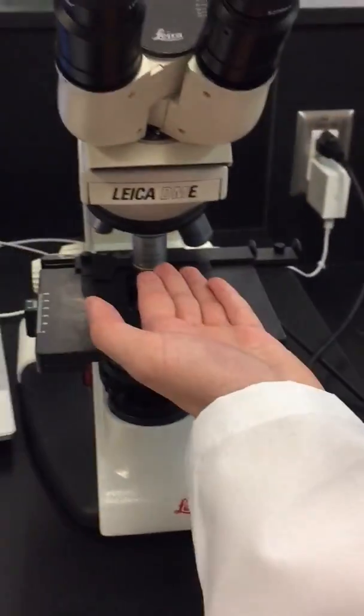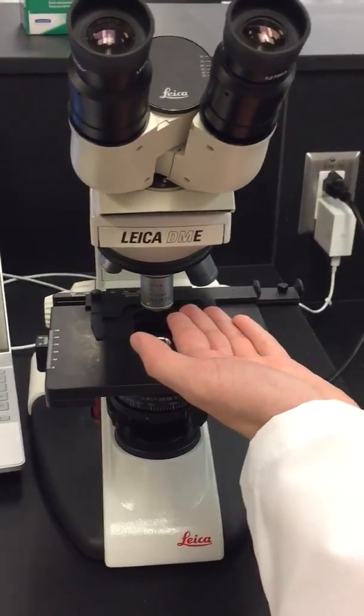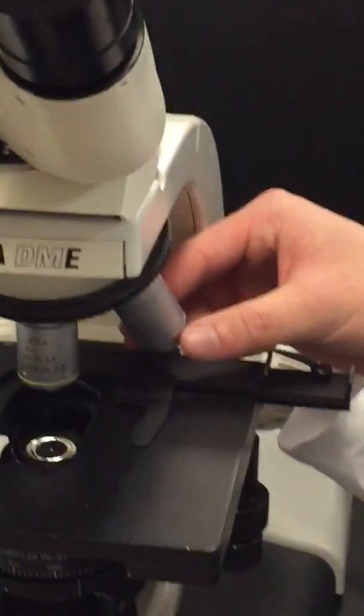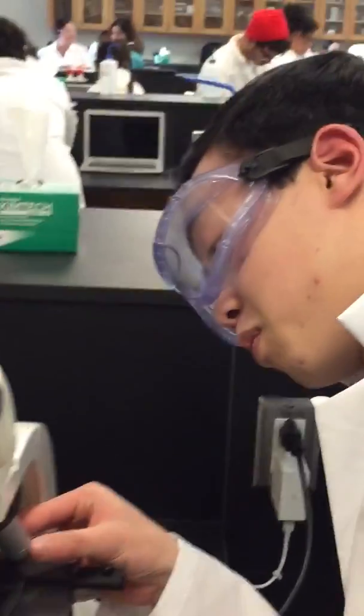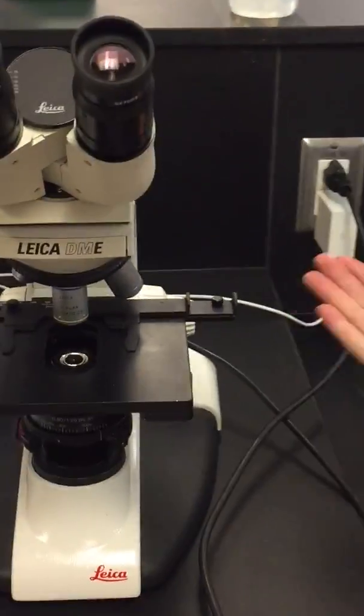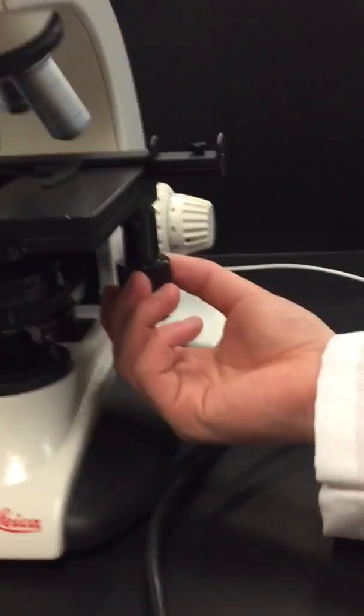The yellow is the second highest which is 10 by 0.25 magnification and this blue one over here is absurdly high, it is a 40 by 0.65 magnification. And lastly, these two knobs here are part of the stage control.